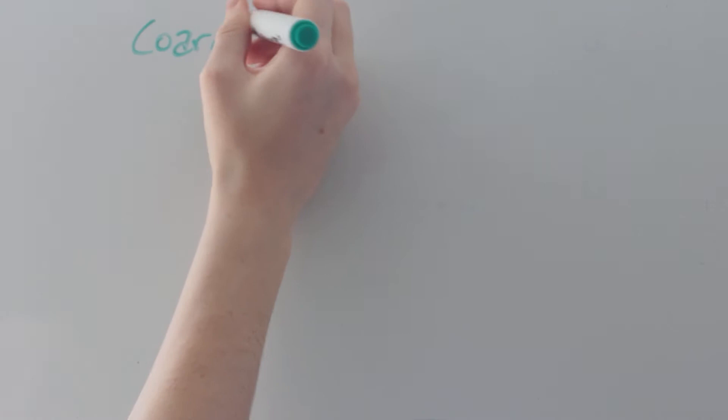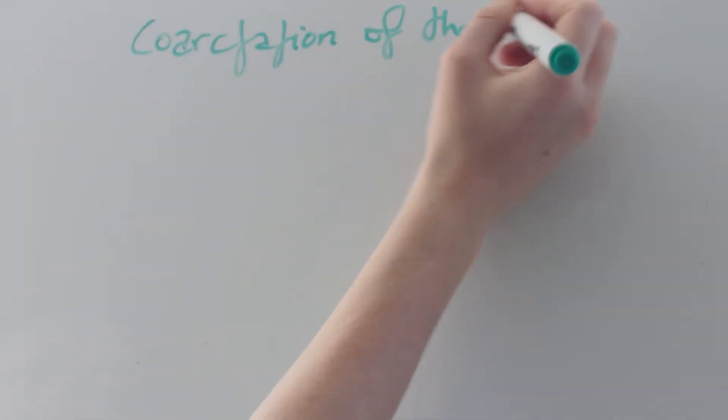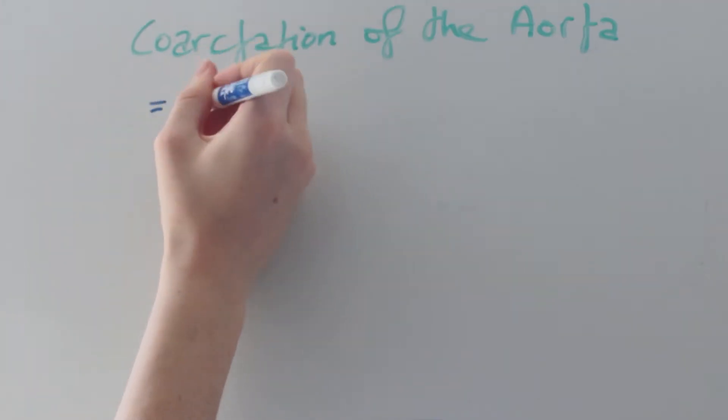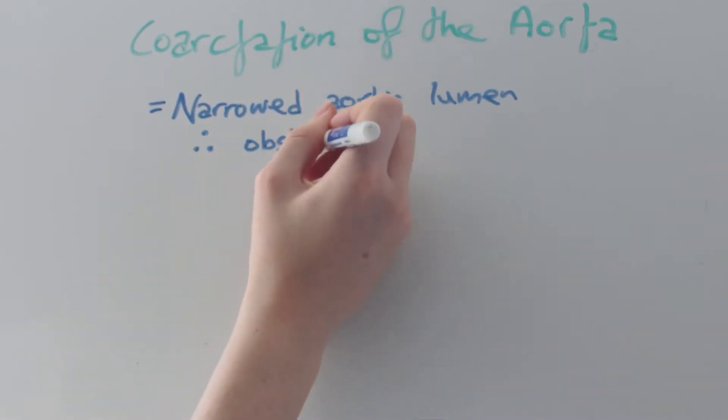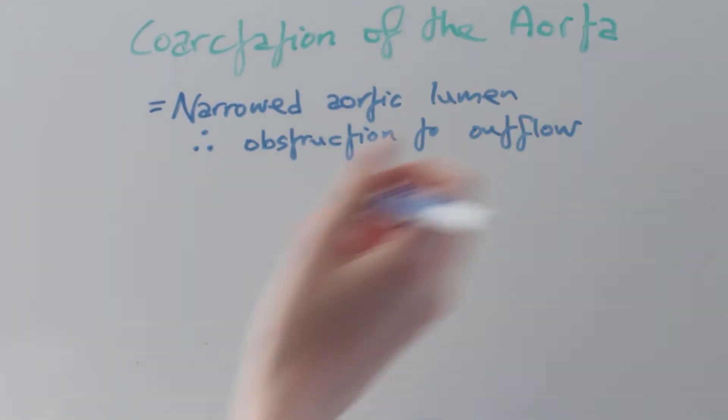Today we'll be looking at a congenital heart disease called coarctation of the aorta. This is a narrowing in the aortic lumen which therefore causes an obstruction to outflow from the heart.